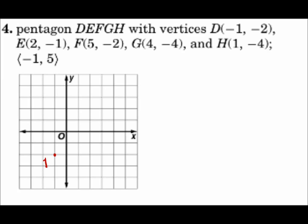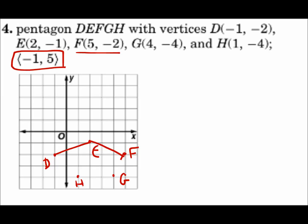The original point D is (-1, -2), E is (2, -1), G is (4, -4), H is (1, -4). I got a little off track — that is the component form of the vector. I skipped point F, which is (5, -2), so let's put that in. There's point F. Now we've got it — let's draw the pentagon.